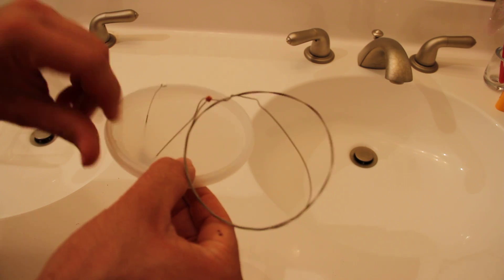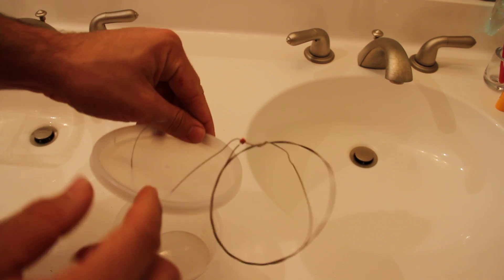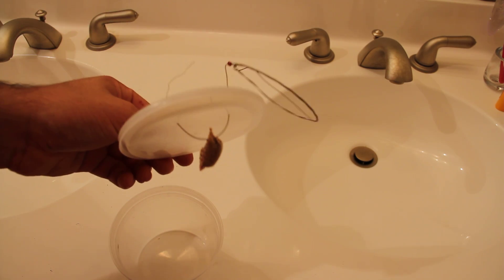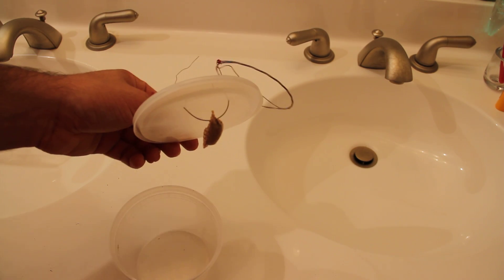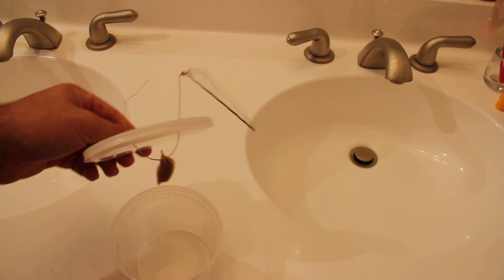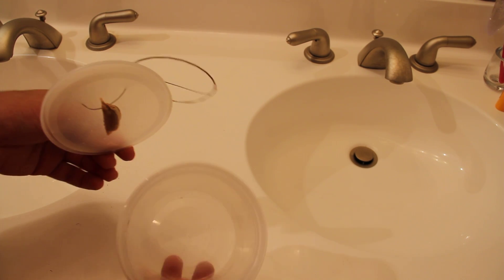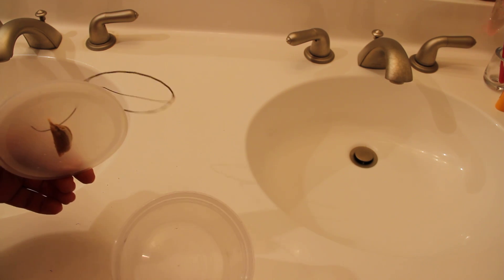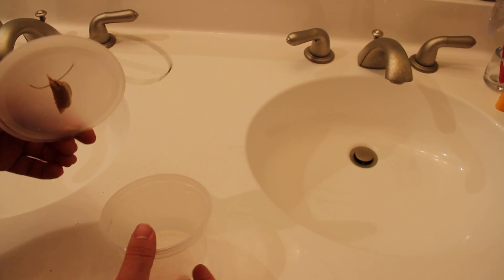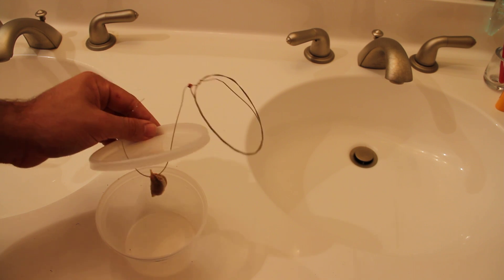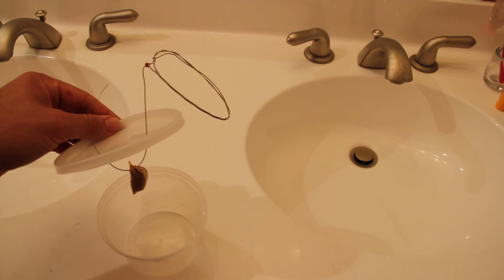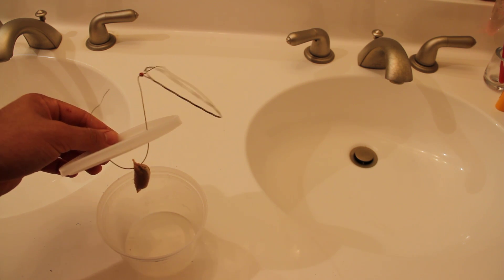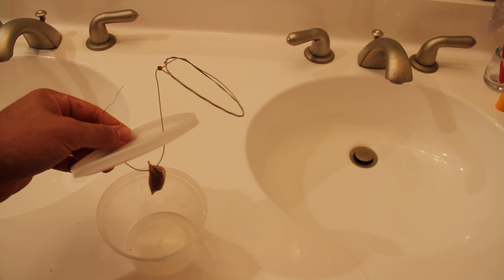So now there it is, I'll get some wire cutters and clip it off and that's how you do that. So this is for incubating the ootheca obviously. Another thing you want to do is put some paper towels in here and just get them wet, keep it humid in there. For Mantis Religiosa you need to expose the ootheca to cold weather.